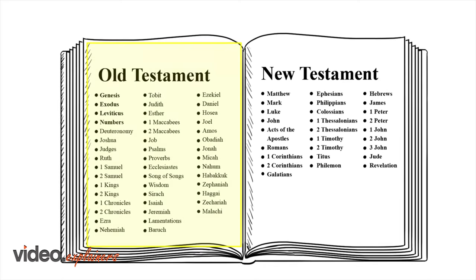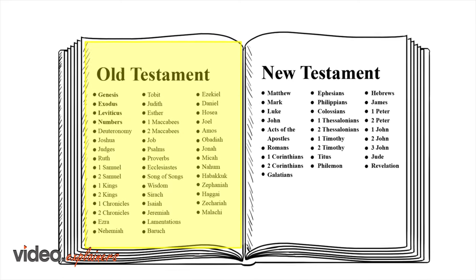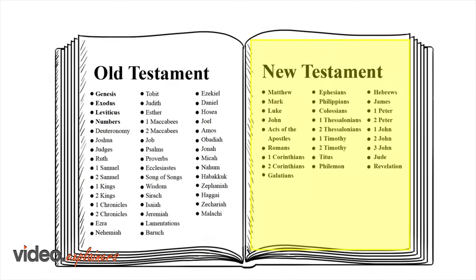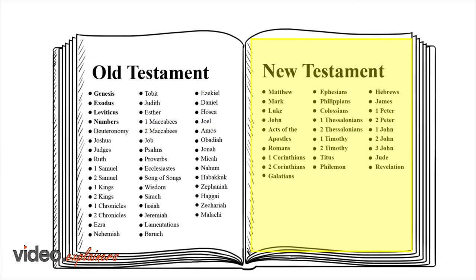The Catholic Bible has 46 books included in the first part, known as the Old Testament, and 27 books in the second part, called the New Testament.